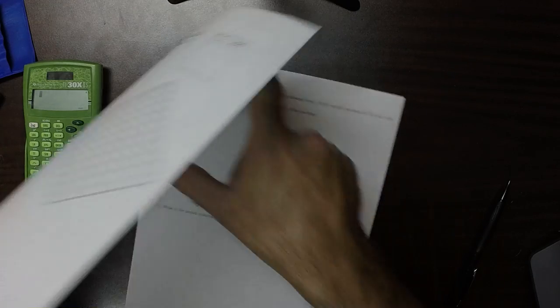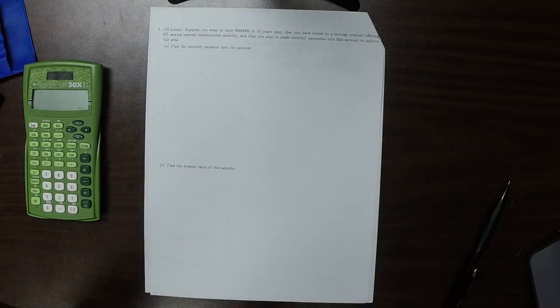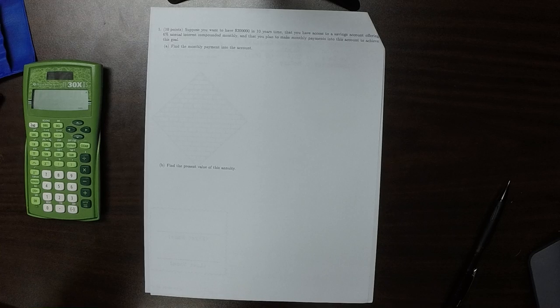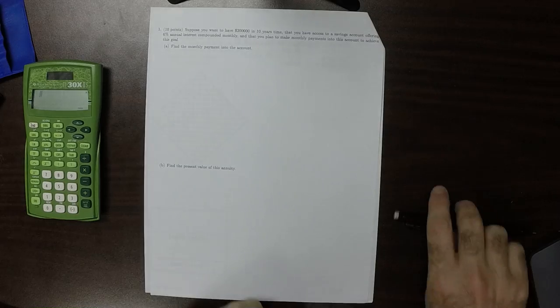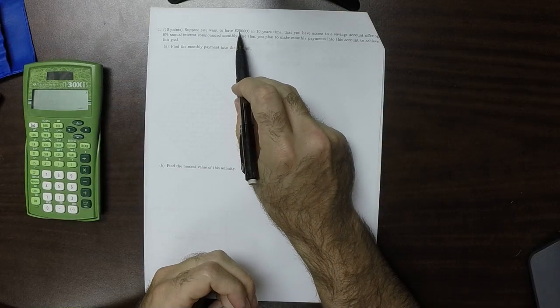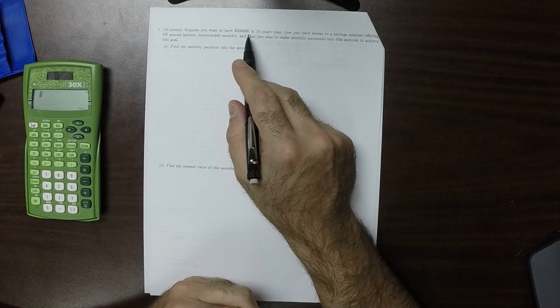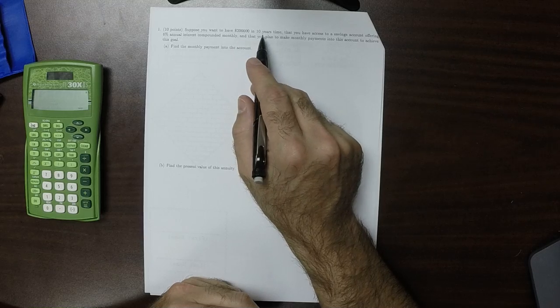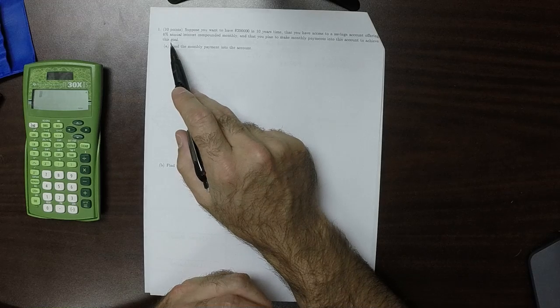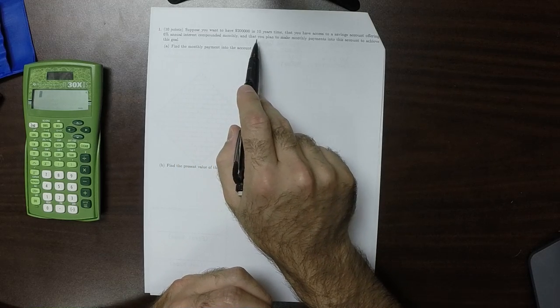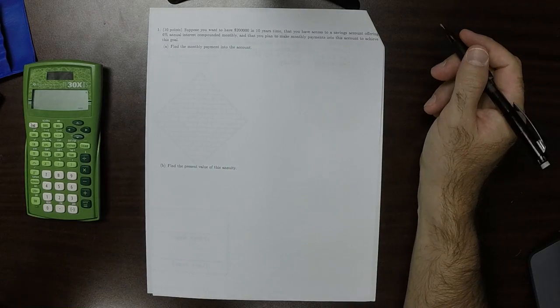This is the solution to Cluius 15. So the first exercise, let's look at what it says. Suppose you want to have $200,000 in 10 years time. So this is a future value. That you have access to a savings account offering 6%, and that you plan to make monthly payments. Okay, so this is an annuity problem.